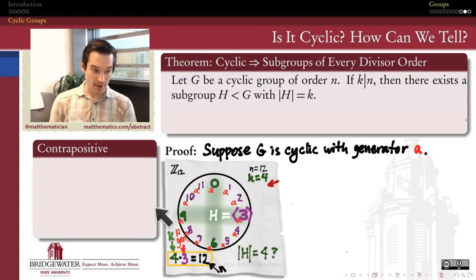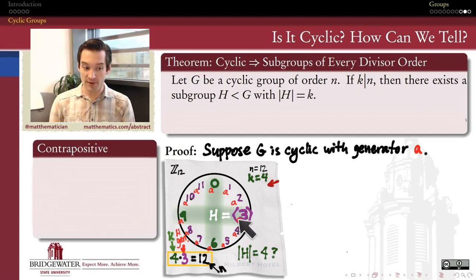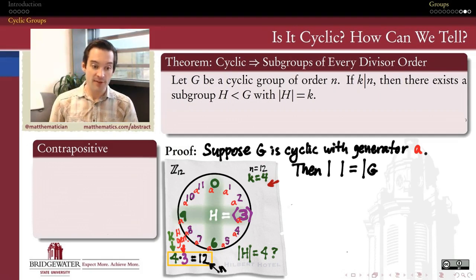Thinking more abstractly about this example on my napkin, the generator that I really wanted was not necessarily 3, but really the third power of a. That third power of a is going to generate the sixth power, the ninth power, and then the twelfth power, which is the same as the zeroth. That suggests the following.